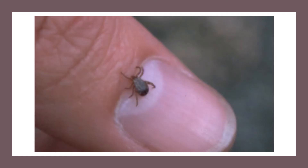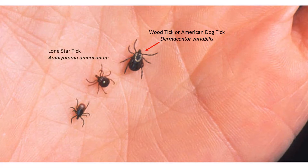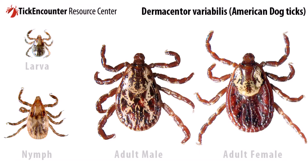Much of our interest in ticks is because we can become sick from diseases passed by ticks when they bite us. Each of our three species of ticks in Wisconsin can cause disease: the wood tick, the lone star tick, and the black-legged or deer tick. The wood tick or American dog tick can carry the bacteria that causes Rocky Mountain Fever; however, the incidence of transmission in Wisconsin is extremely low.